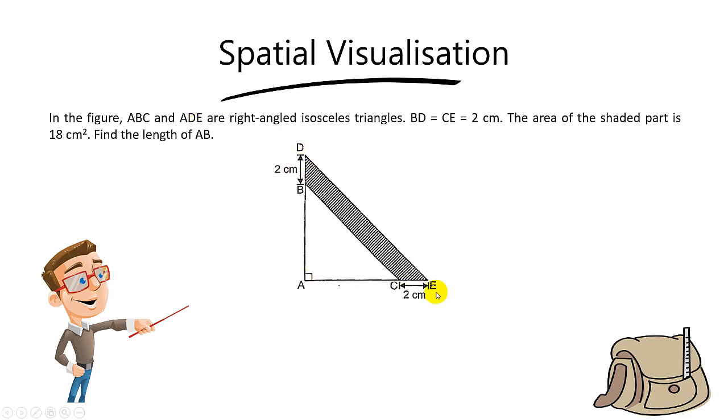You can see that ADE is bigger than ABC. Both triangles are right-angled isosceles. Isosceles means two of the lengths are the same.